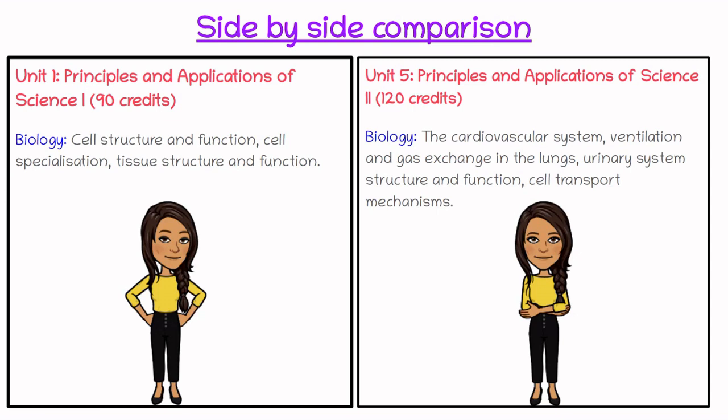The biology section in Unit 1 covers cell structure and function, cell specialisation, and tissue structure and function. In Unit 5 you develop these ideas further, looking at organ systems such as the cardiovascular system, the ventilation system, and the urinary system including the structure of the kidney, as well as cell transport mechanisms including active transport and passive transport through the cell membrane.